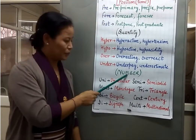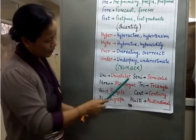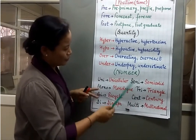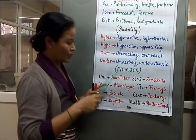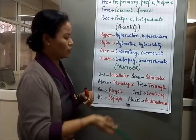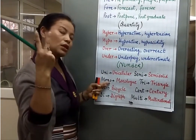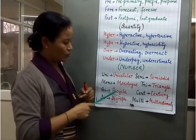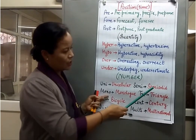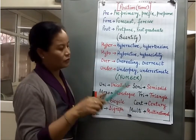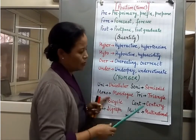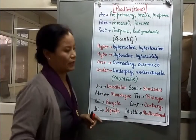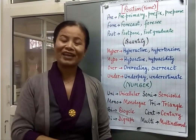Then we have prefixes of number: uni, mono, bi, di, semi, tri, cent, and multi. 'Unicellular' means a single-cell organism. 'Monologue' is one person speaking, while 'dialogue' is a conversation between two persons. 'Bicycle' has two wheels. 'Digraph' uses di. 'Semi' usually means half — semi-solid. 'Tri' means three. 'Cent' means a hundred — for example, century. And 'multi' means many — for example, a multinational company. These are some of the common prefixes.